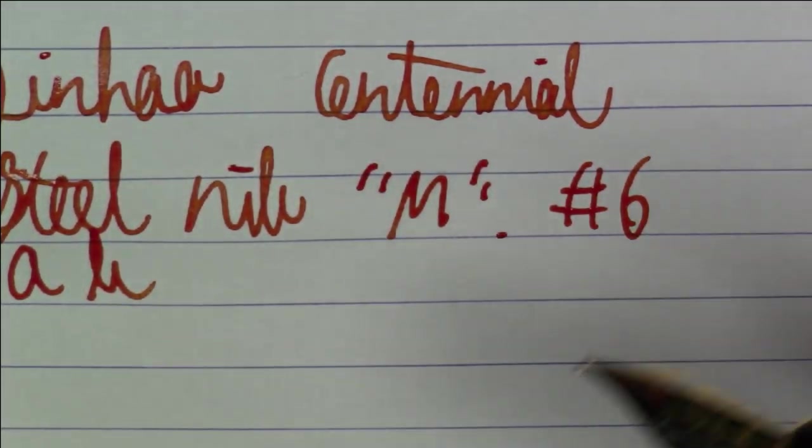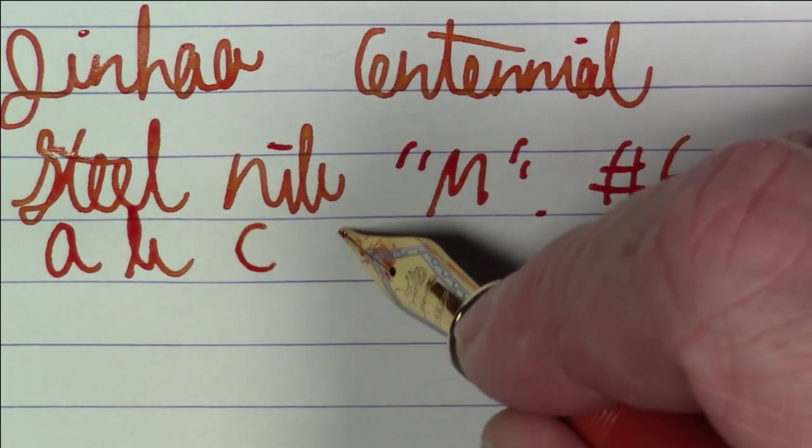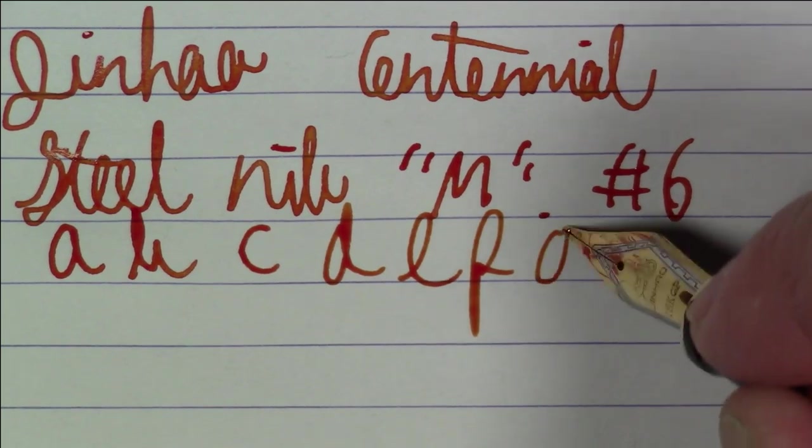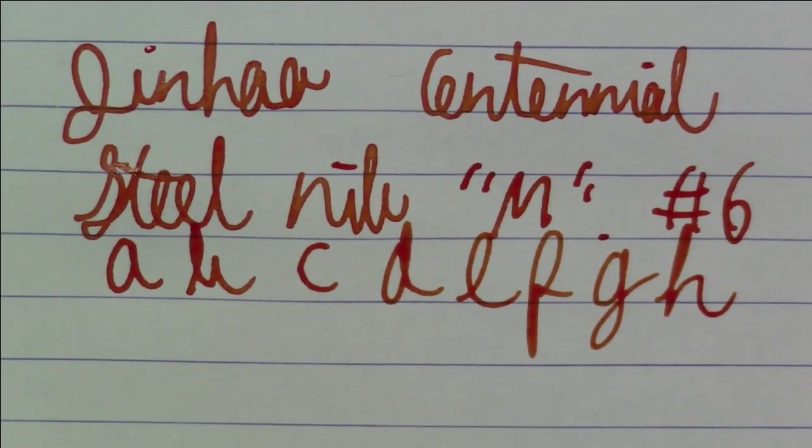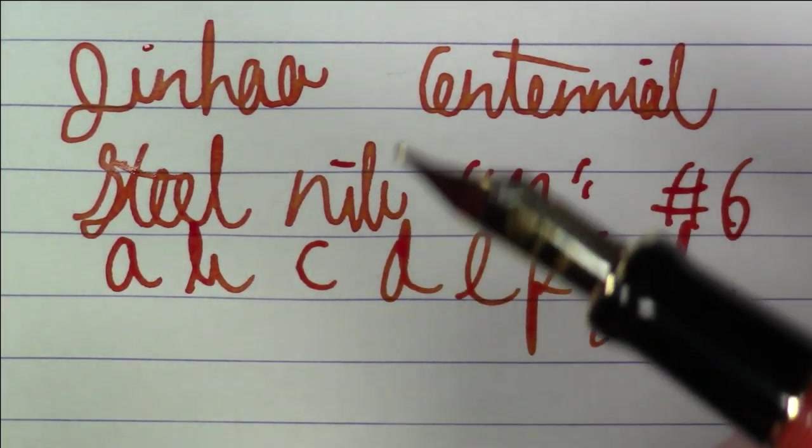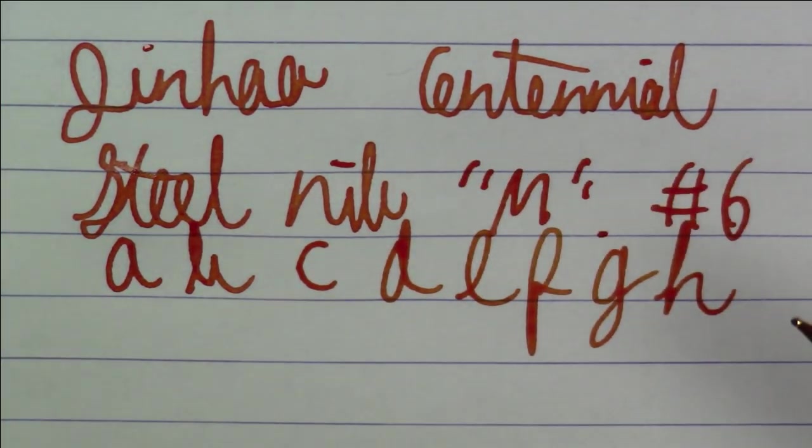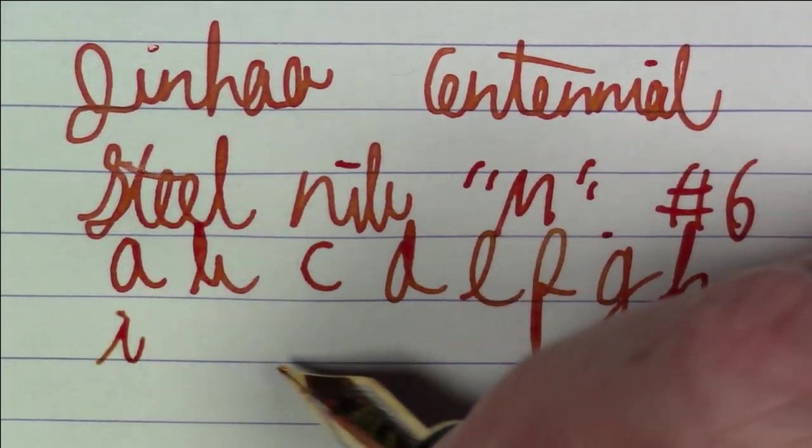This Jinhao number six nib seldom disappoints me. But if it does, it's definitely one of the easiest nibs to tune yourself. Quite forgiving, et cetera. Matter of fact, very often, people who want to take up Nibmeistering, they'll buy themselves a whole bunch of these Jinhao number six nibs and use these for practice, because they're fairly cheap. They're, again, easy to get. And, again, they're quite easy to work with and quite forgiving.